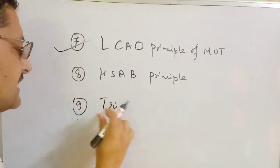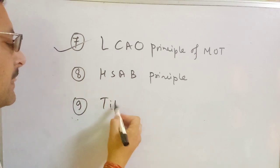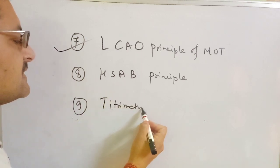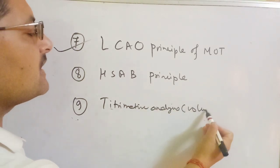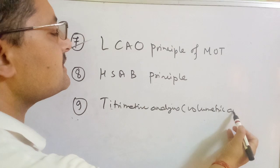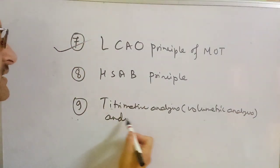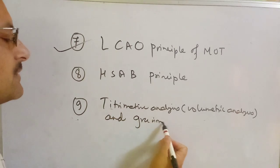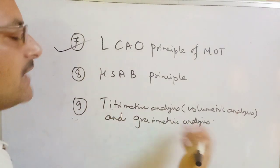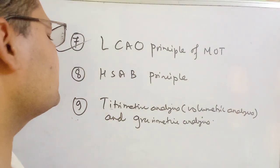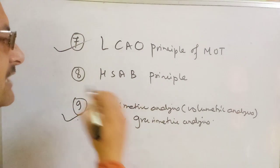The next chapter is titrimetric analysis. Titrimetric analysis is also called volumetric analysis. This is also called gravimetric analysis. This is called volumetric analysis.